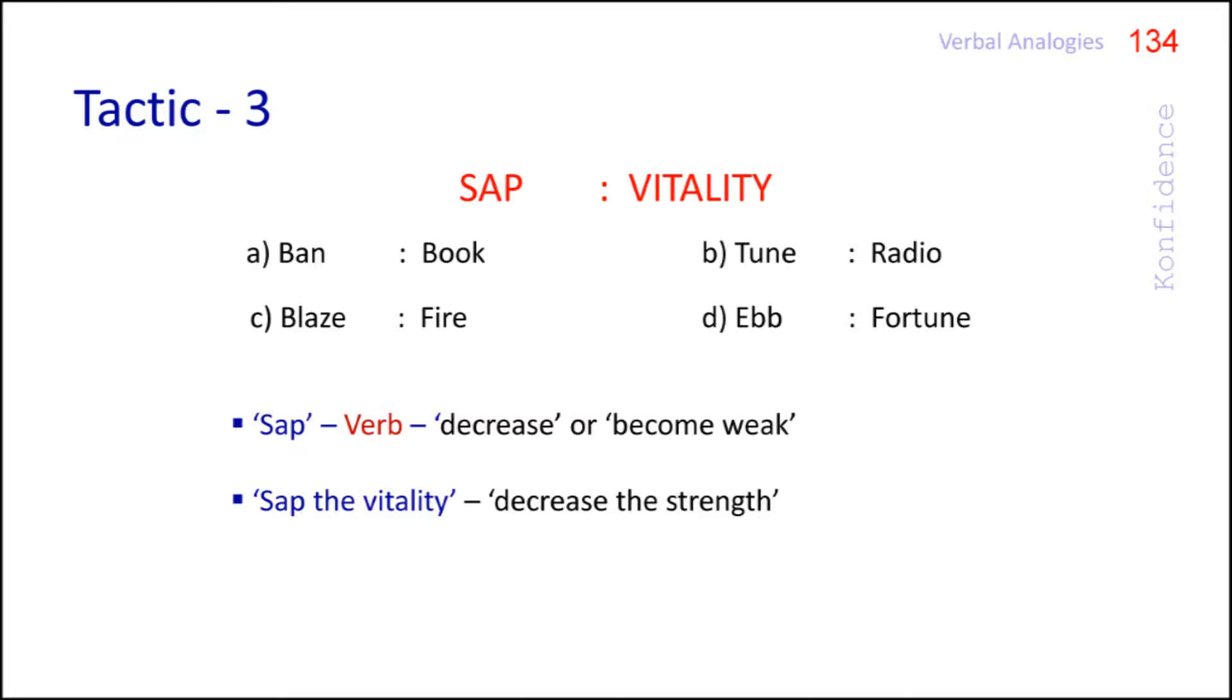Now check the options. None of the option except D has a relationship similar to the question pair. In option D, the word ebb means grow less or become weak. Hence ebb the fortune means decrease the wealth. This is how we find out answers when a word has many meanings.